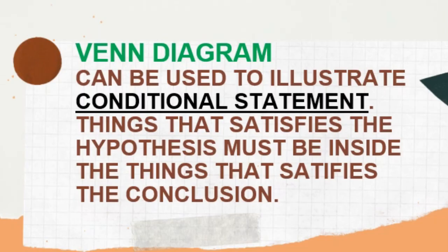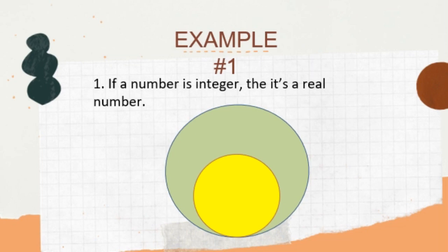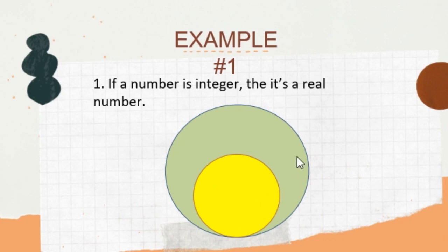Next, Venn diagram. A Venn diagram can be used to illustrate a conditional statement. Things that satisfy the hypothesis must be inside the things that satisfy the conclusion. Looking at the diagram, we have two circles, one within another. The hypothesis is always going to be inside the conclusion. The yellow inner circle is the hypothesis — integers — and the green outer part is the conclusion — real numbers.